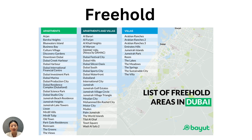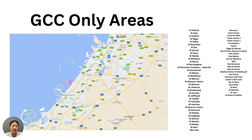Freehold properties are ones you can buy as an expat — you don't have to be a citizen of the GCC to buy properties in these areas. You can sell them whenever you want and let your children or next of kin inherit the properties. There are also GCC-only territories; basically everything not mentioned in freehold is a GCC-only area. It would usually be indicated in property advertisements, but as a broker it is your responsibility to tell the client if they can't purchase in certain neighborhoods.